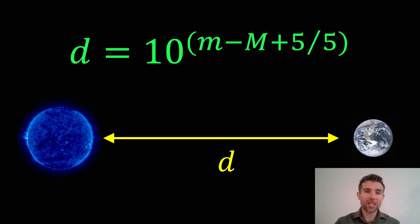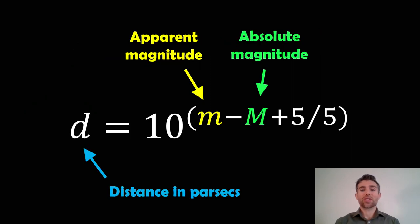We've got that equation at the top there where we've got d and two m's in there. I'm going to explain what those variables are and how we can use them to get d, which is our distance between Earth and a star. So going back to the equation, we've got d at the front. This is our distance in parsecs. I'll explain what a parsec is in a minute.